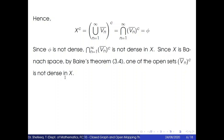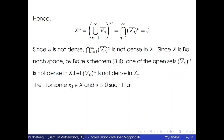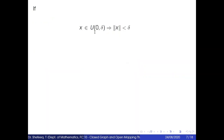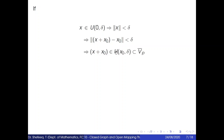So let V̄p complement be not dense in X. Then for some x₀ belonging to X and δ > 0, we have that U(x₀, δ) is a subset of V̄p. Now if x belongs to U(0, δ), this implies the norm of (x + x₀) − x₀ is less than δ, which implies x + x₀ belongs to U(x₀, δ), which is a subset of V̄p.